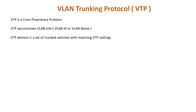A VTP domain is simply a set of trunk switches with matching VTP settings: domain name, password, and VTP version. All switches inside the same VTP domain share their VLAN information with each other.